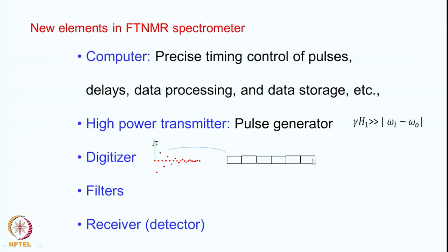Binary values such as 101010 or 11111 are stored, and this is the analog-to-digital converter, or ADC. Once the data is converted into digitized form it is stored in the computer as a word, with each point going as a word. When words are added for signal averaging, each of these points gets added again and again in the computer. Filters are used to filter out unwanted spectral excitations. The receiver collects the data, and phase sensitive detectors collect either the X or the Y component of the magnetization.